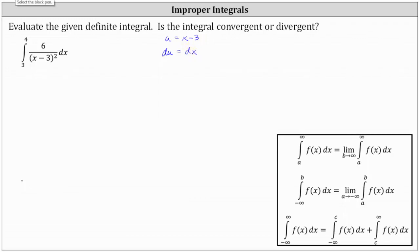Now let's write the integral with respect to u. If u is equal to x minus three and du equals dx, we have six divided by u squared du. Now let's find the new limits of integration with respect to u. The limits of integration from three to four are x values, not u values.